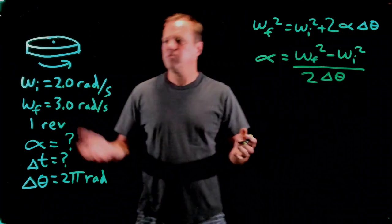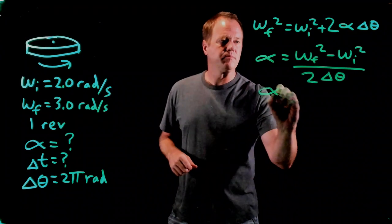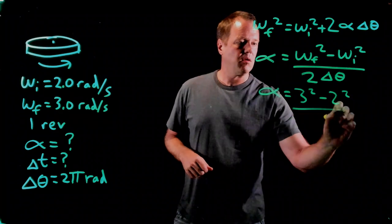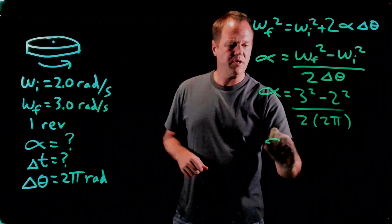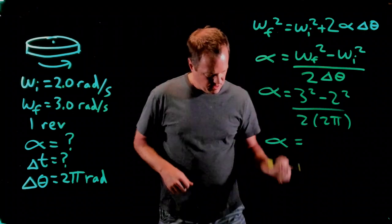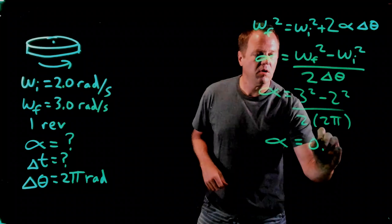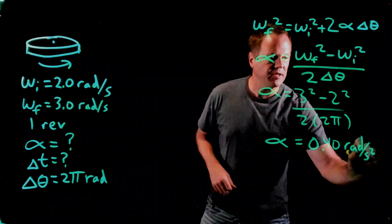And then it's just a matter of plugging in the numbers from the data that we're given. Check in those numbers, and our calculator spits out an answer of 0.40 radians per second squared.